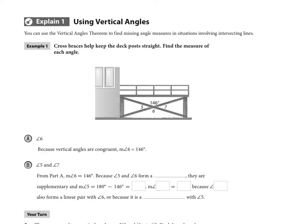Part B asks us for angles 5 and 7. It's a little more involved but not as difficult as you might think. From part A, we know that the measure of angle 6 is 146 degrees and because angles 5 and 6 form a linear pair, they're supplementary. So the measure of angle 5 is just 180 minus 146, or 34 degrees.